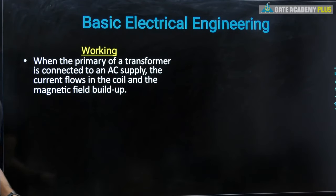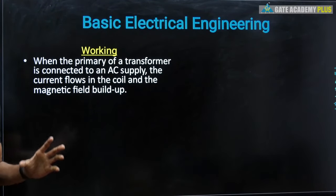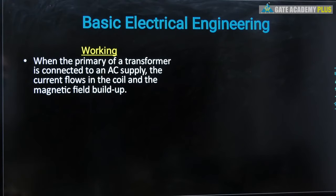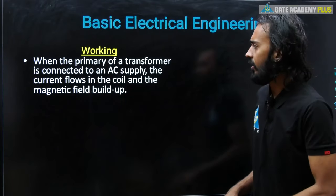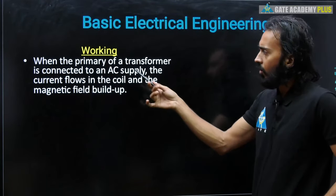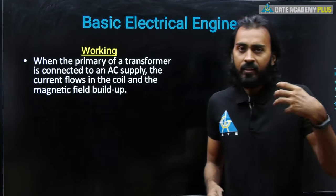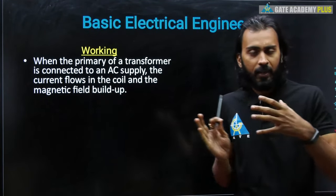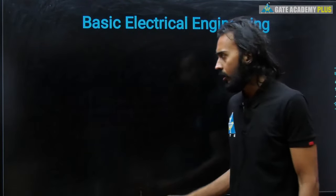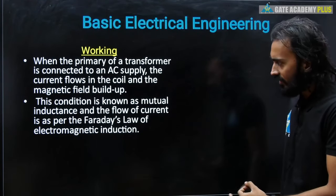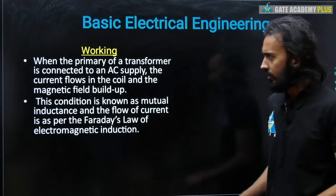When the primary of a transformer is connected to the AC supply, the current flows in the coil and the magnetic field builds up. We connect an alternating current supply to the primary side winding, and as the current flows in the coil, the magnetic field builds up. This condition is known as mutual inductance, and the flow of current is as per Faraday's law of electromagnetic induction.